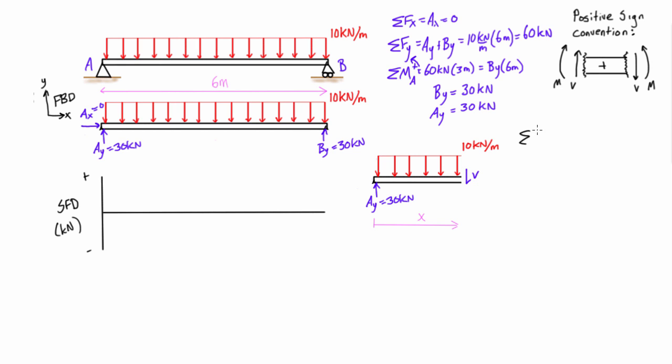So we get sum of forces in the Y is going to be, well we have 30 kilonewtons going upwards and then we have V acting downwards and we have this distributed force so 10 kilonewtons per meter times X in meters for however far along we're placing our virtual cut. Then we'll get this expression for V which is equal to 30 minus 10X.